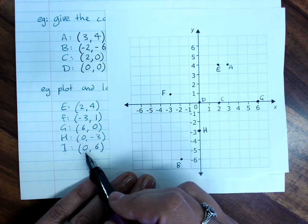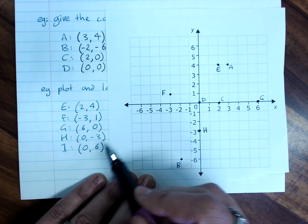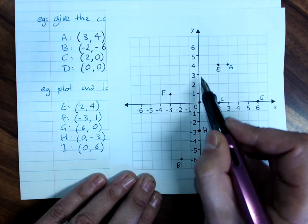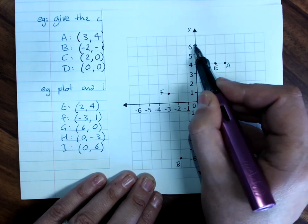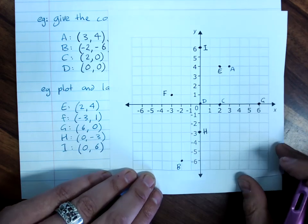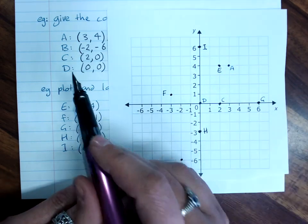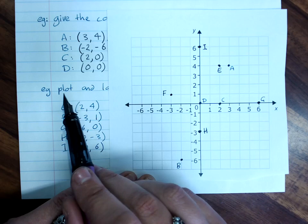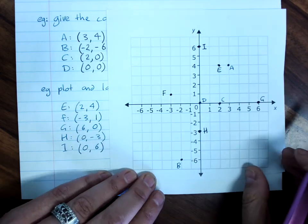I is at zero, six. Zero on the x, up to six on the y. So we've remembered how to give the coordinates of a point, and how to plot and label a point on the number plane.